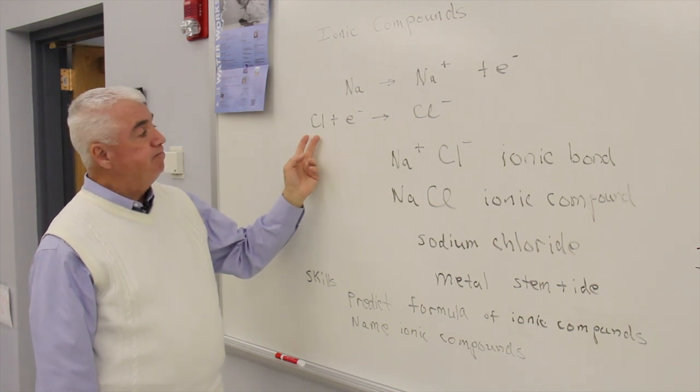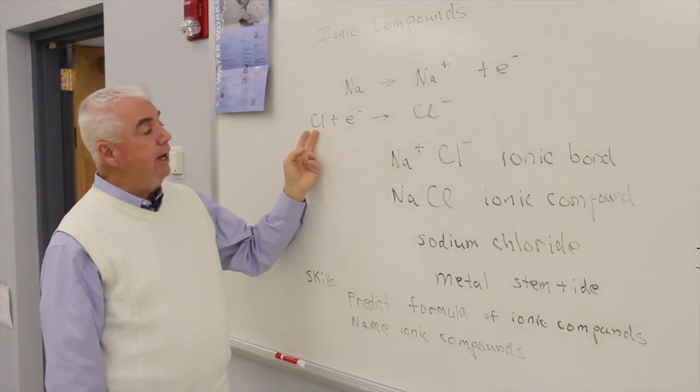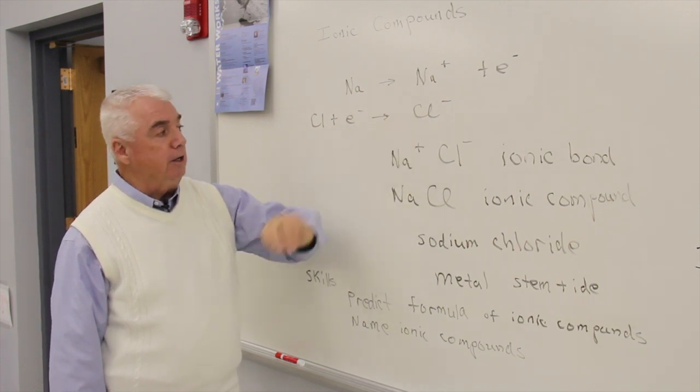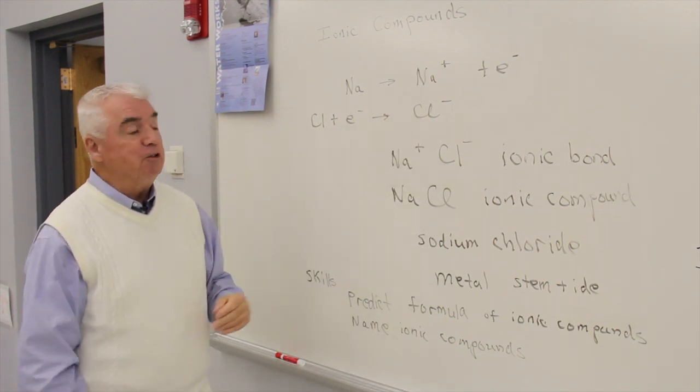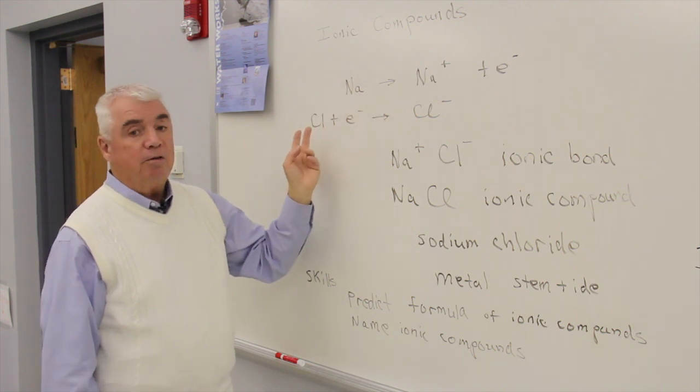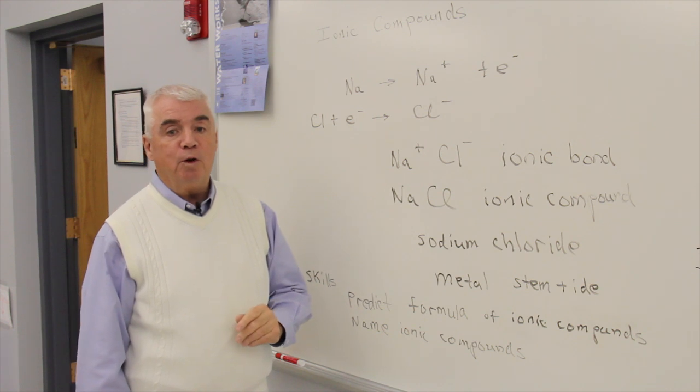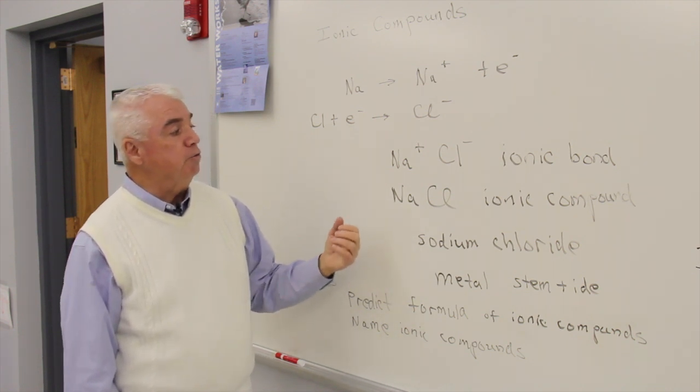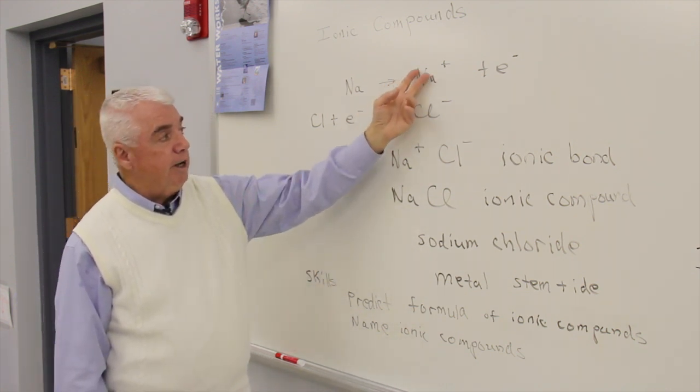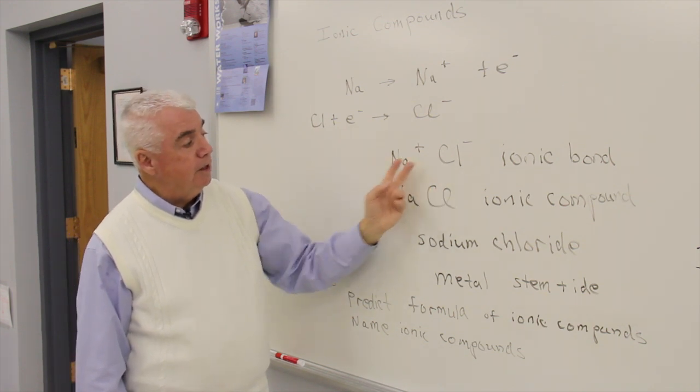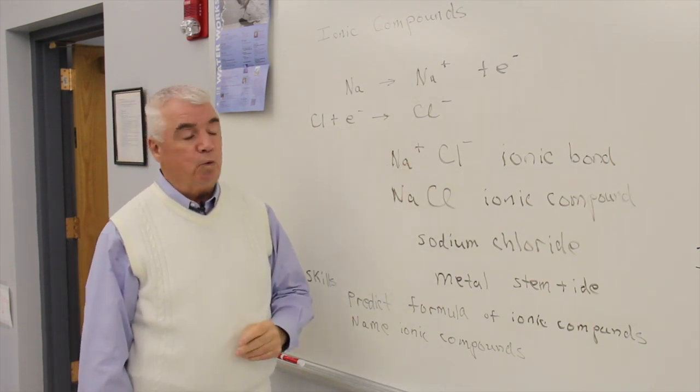Chlorine, as in group 7A, likes to take on an electron to form a negatively charged ion. What makes sense if these two atoms were in close proximity, that maybe sodium and chlorine would work out the transfer of an electron. We'd get a positive ion and a negative ion, and that these two ions would attract one another.